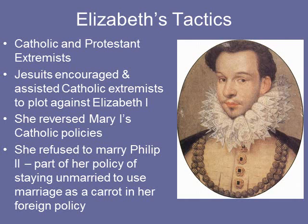Elizabeth's tactics: she had to deal with Catholic and Protestant extremists. Jesuits encouraged and assisted Catholic extremists who plotted against Elizabeth I — there were a bunch of plots, including the Ridolfi plot, the Babington plot, and various others. She reversed Mary Tudor's Catholic policies. She refused to marry Philip II as part of her policy of staying unmarried, using marriage as a carrot in her foreign policy. The former Duke of Alençon, who became the Duke of Anjou — who we saw become the titular king of the Netherlands when they rejected Philip II — thought he had a shot at marrying her and becoming king of England, but it didn't happen.